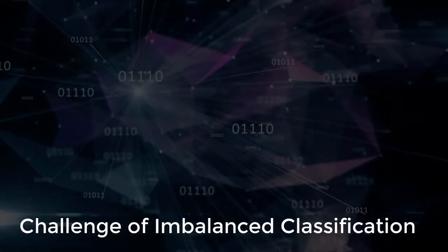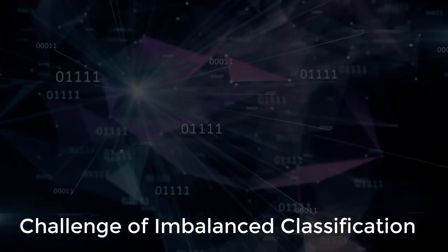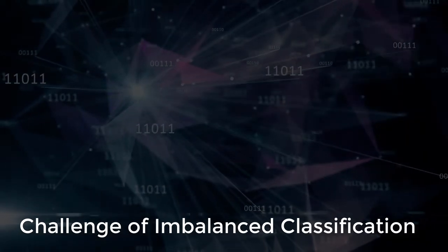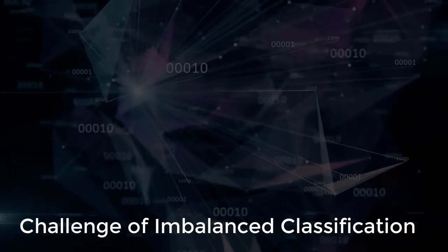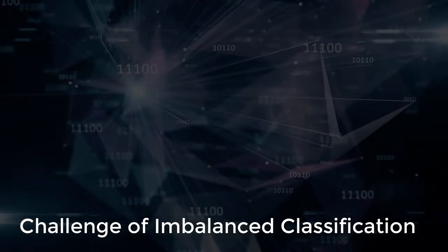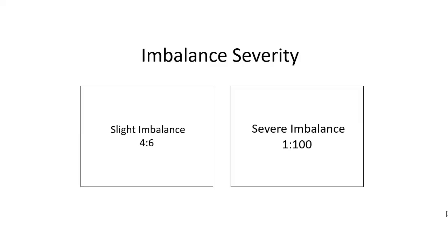Now let's talk about the challenge of imbalanced classification. The imbalance of a class distribution will vary across problems — from a slight imbalance, such as a 4-to-6 ratio, to a severe imbalance of 1-to-100 or more. A slight imbalance is often not a concern and can often be treated as a normal classification problem. A severe imbalance can be challenging and may require the use of specialized techniques.